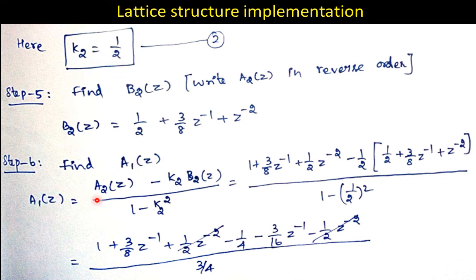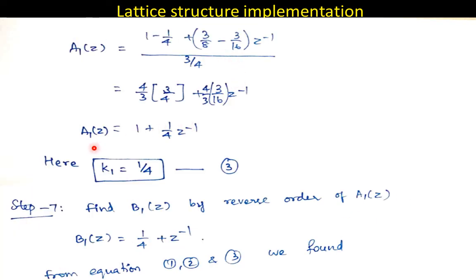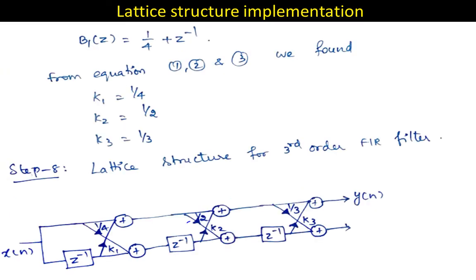Now find A1(z) using: A1(z) = [A2(z) − k2·B2(z)] / (1 − k2²). Substituting k2 = 1/2 and B2(z), simplify to get A1(z). The coefficient of z⁻¹ in A1(z) gives k1 (equation 3). The three filter coefficients are: k1 = 1/4, k2 = 1/2, and k3 = 1/3. No further iterations are needed.